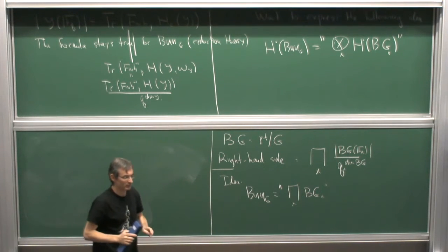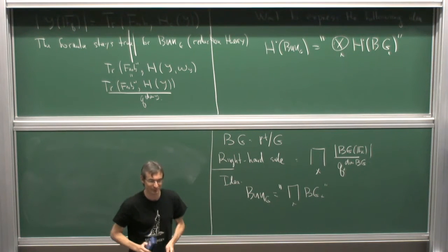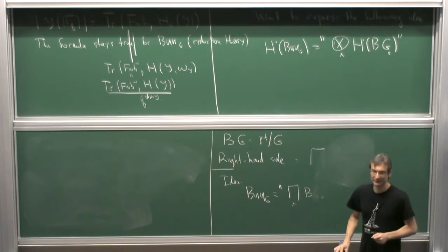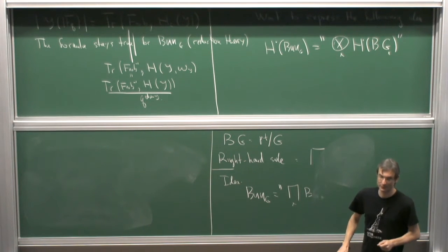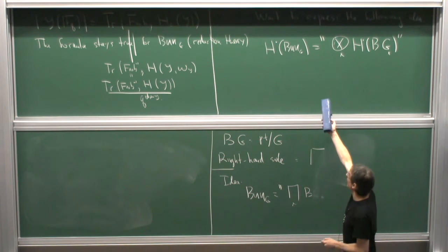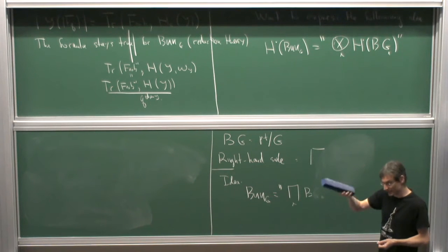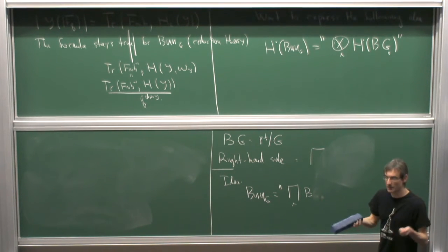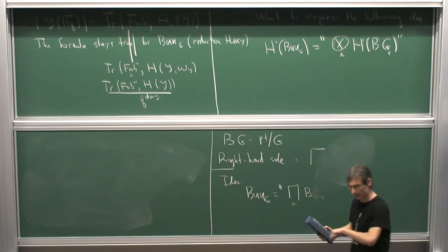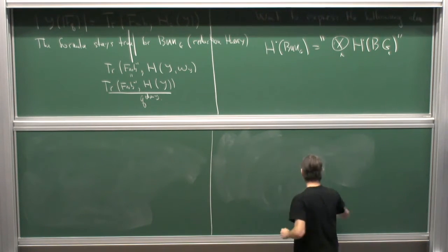Parenthetically, in number theory we don't really like Lie algebras, so that's why I won't use that approach. There's also something called the Ran space, and the product formula — once properly defined — will be the Ran space / factorization formula, which I will make precise. Once I define the right-hand side correctly, taking the trace of Frobenius will arrive at the product formula as written.